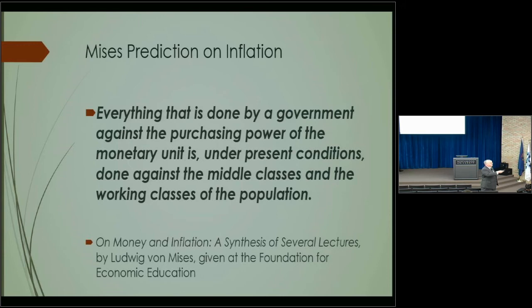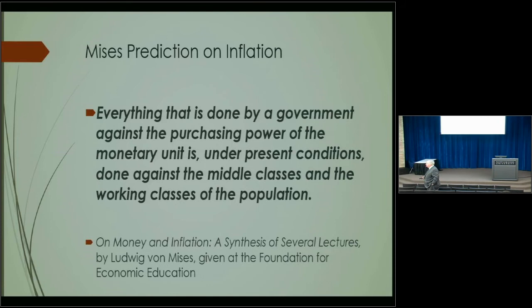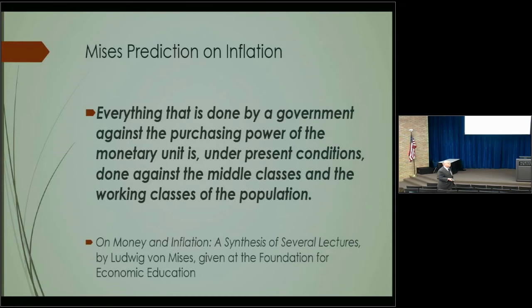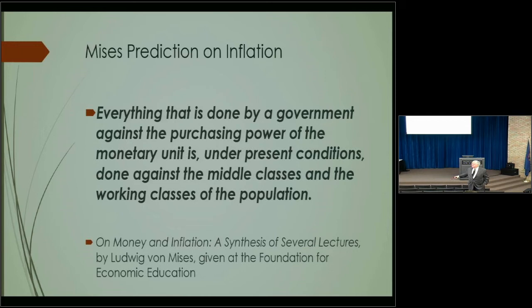Let's say you retire from Chrysler with a fixed pension of two thousand dollars a month. Suddenly the Federal Reserve starts pumping up the money supply. The money goes into housing, pushing up house prices. Your tax bill — based on market value — doubles or triples. But your income hasn't increased. That's the important thing about inflation: your costs go up, your income stays the same.